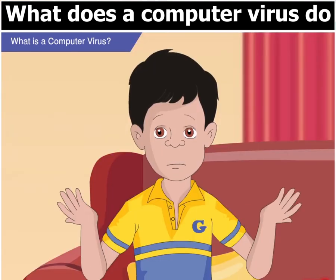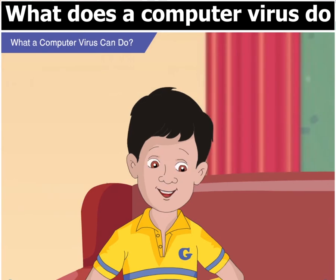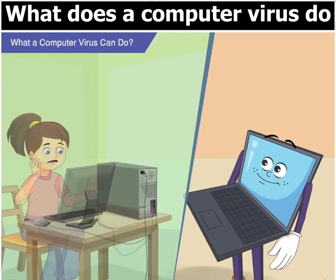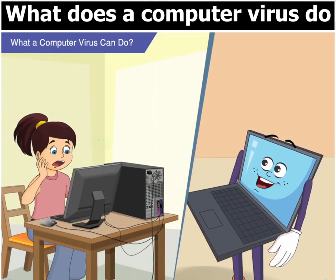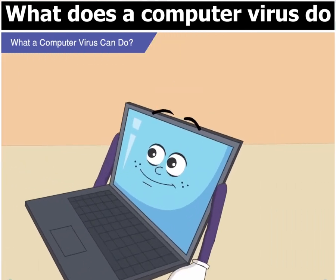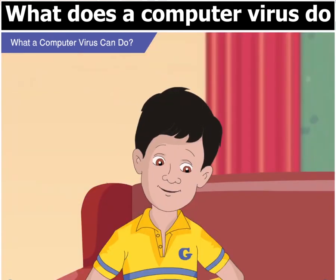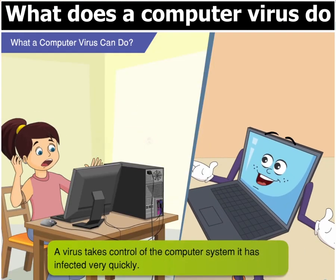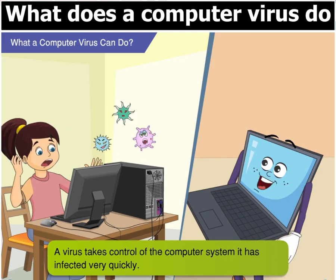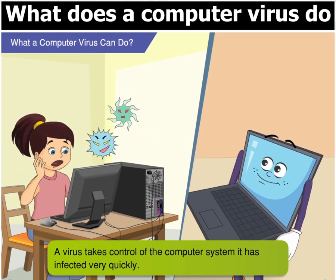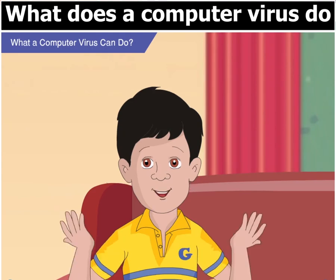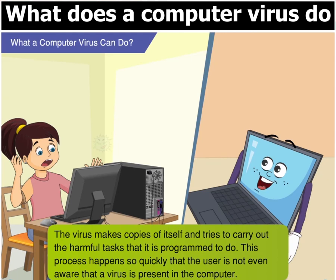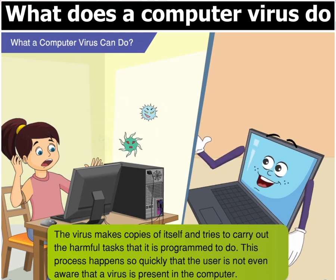That's really horrible. How come we do not get to know when a virus is entering our computer? It is very difficult for a user to notice when a computer is being affected by a virus. Why is that? Are these viruses very small? No, Goggle. This is because a virus takes control of the computer system so quickly that one cannot notice it. And then it makes copies of itself and tries to carry out the harmful tasks that it has been programmed to do.